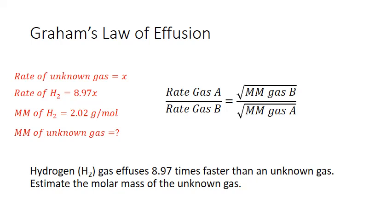So we can substitute these values into our equation and we should be able to solve for molar mass of the unknown. So I'm going to define for this equation hydrogen as my substance A and my unknown as substance B. And I'll substitute those into the formula.